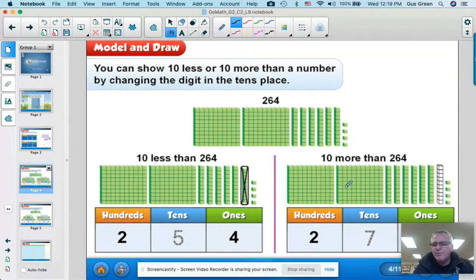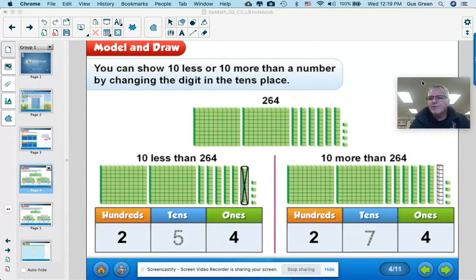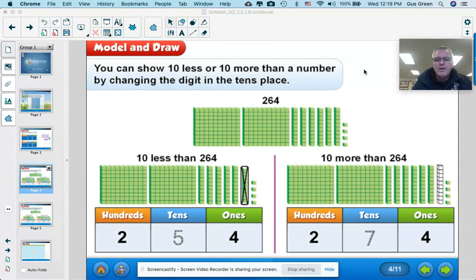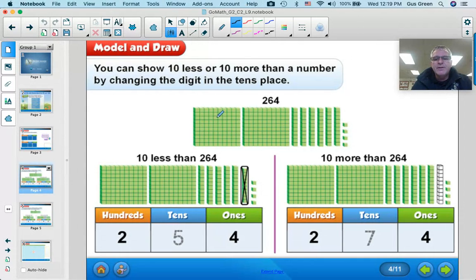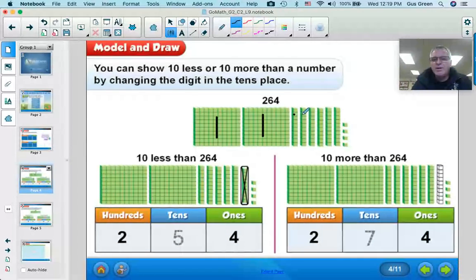All right, the first slide I'm going to share with you. Let me move my picture out of the way a little bit. The first screen I'm going to share with you is the number 264, and you can see that we have 100, another 100, and then we've got 1, 2, 3, 4, 5, 6 tens. So we have 2 hundreds, 6 tens, and 1, 2, 3, 4 ones.